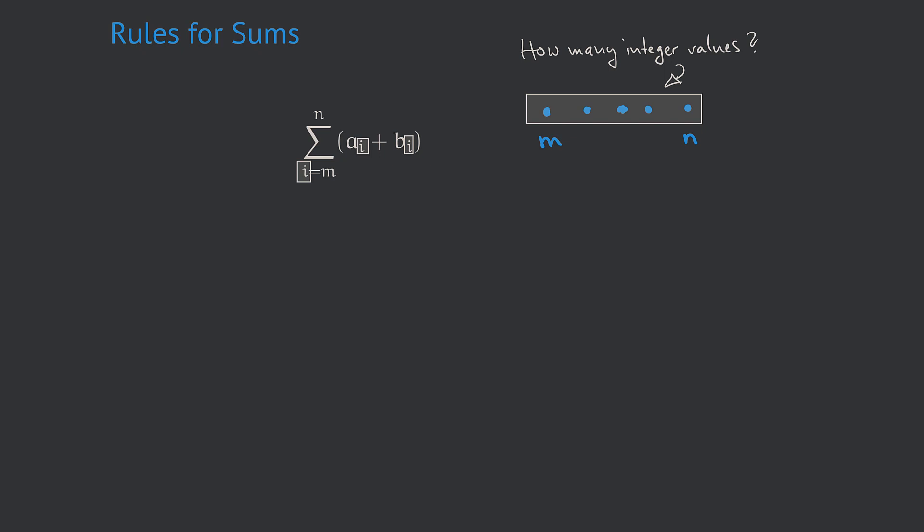At first glance, the difference between n and m, i.e. n minus m, might look like a good idea. However, as both m and n are included, it is even one more than that difference. Therefore, the answer is n minus m plus 1.